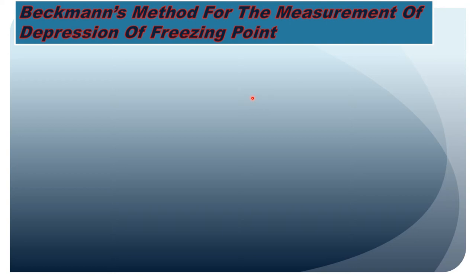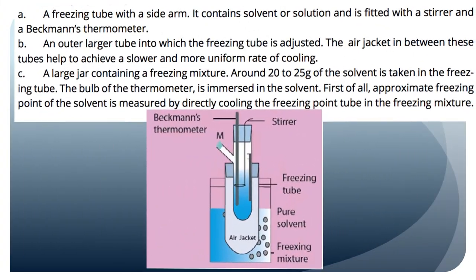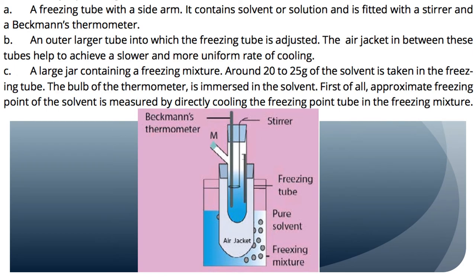This is the apparatus which we use for the measurement of depression of freezing point. This is the experimental setup. It consists of an inner freezing tube with a side arm — this one here.